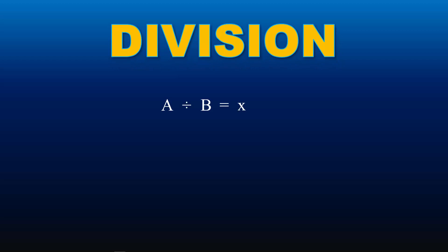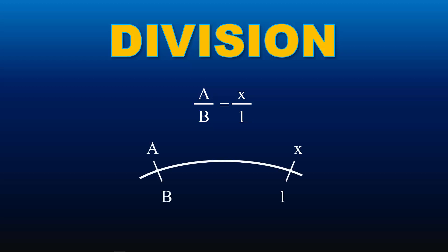The second operation that we will look into is division. Let's say A divided by B is equal to X. We can rearrange the equation into A over B equals X, or A over B equals X over 1. This looks just like ratios, and it is. Thus we can arrange the variables on the outer and inner scales the same way as ratios. Since there is no number 1 marker on CRP5, we will use the blue number 10 index instead.